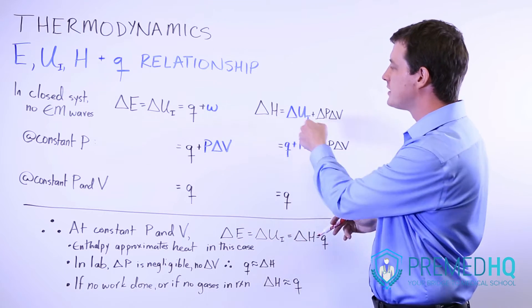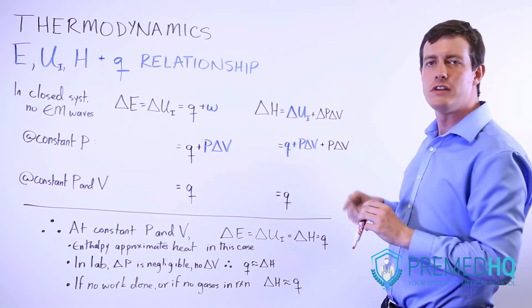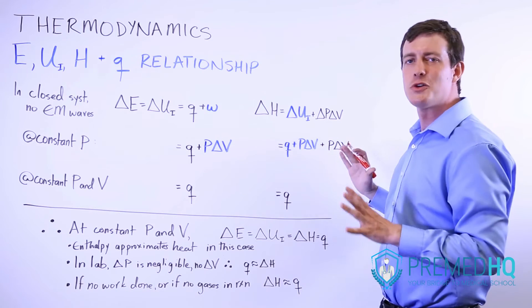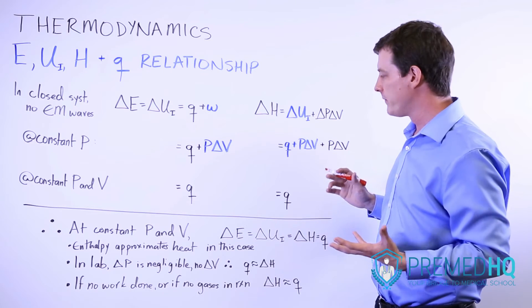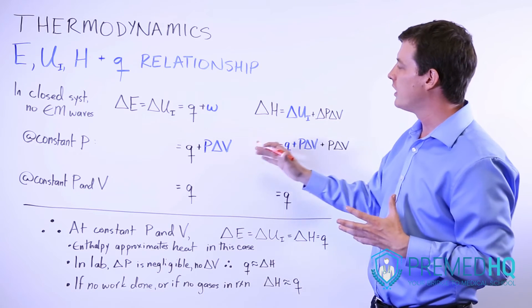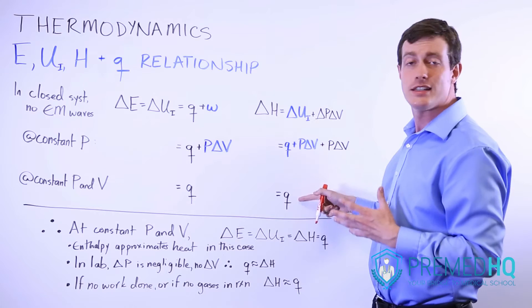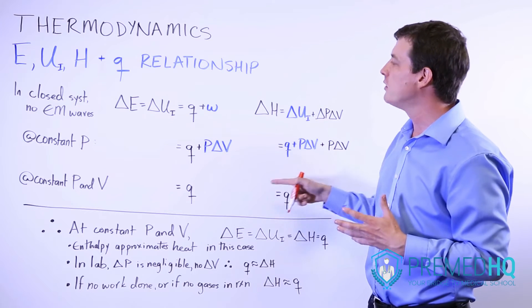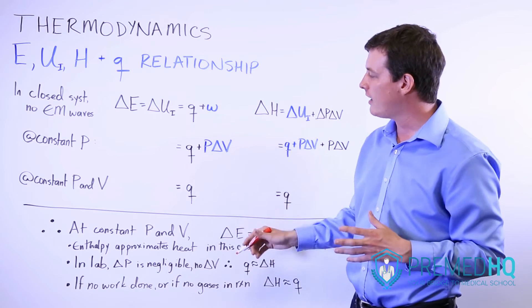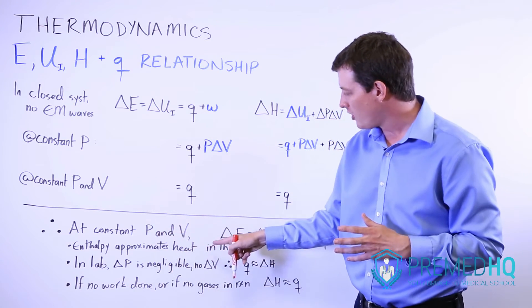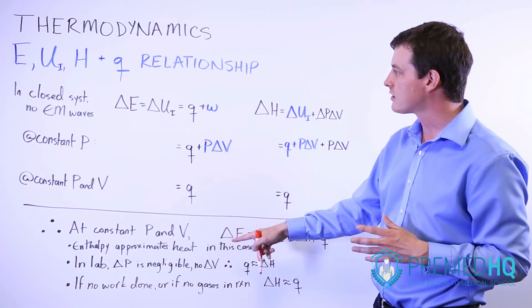For this definition of enthalpy, now we're dropping both PV terms, because there is no change in volume, therefore these terms equal zero. This is where you can assume that enthalpy and heat are the same thing, and where you can assume that internal energy is equal to heat. So if you have constant pressure and volume, then all of these things are the same.